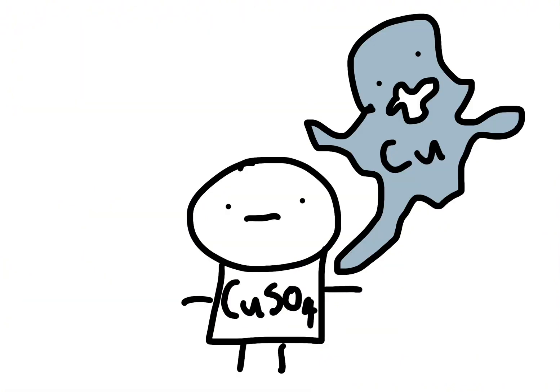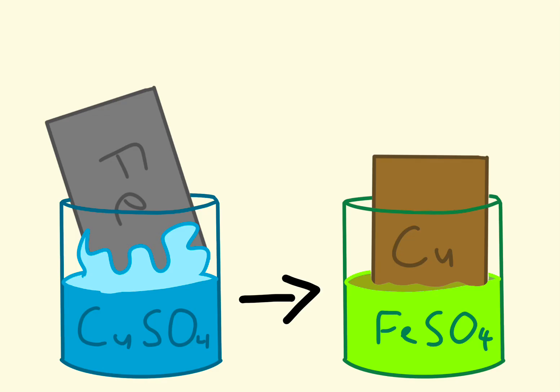This forces the less reactive metal out of the compound. Because of its loss of electrons, the less reactive metal is no longer part of the stable compound and gets pushed out. The more reactive metal combines with the remaining elements from the original compound to form a new stable compound.